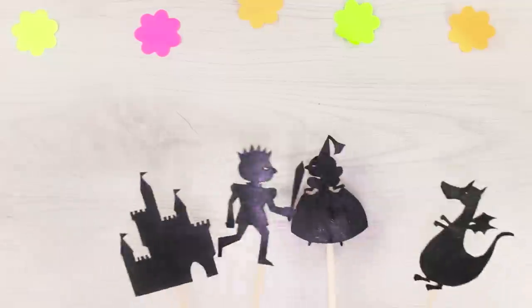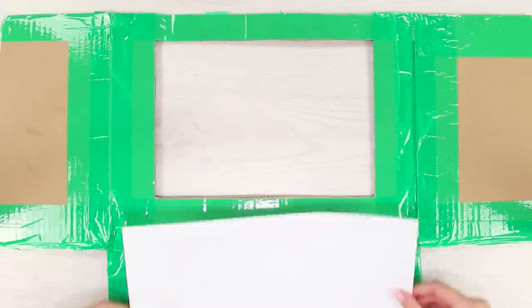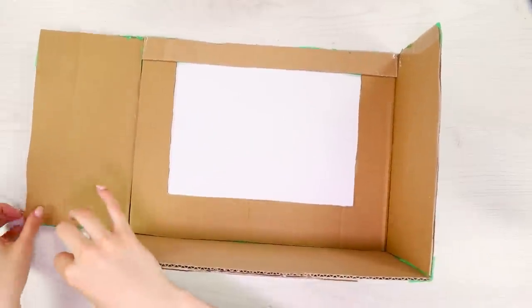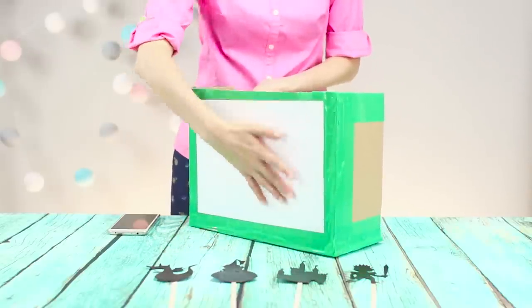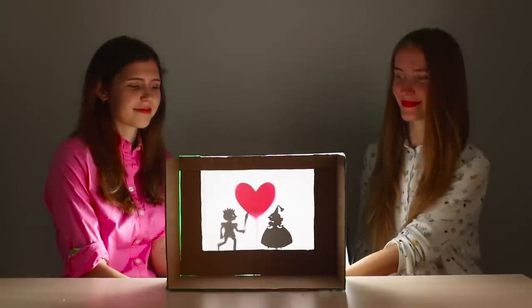Cut the figures out from cardboard and attach them to the sticks. Make a scene from the parts of the cardboard box. Attach a blank sheet of paper to the cardboard. Connect the sides of the box with scotch tape. Light up the phone on the back of the improvised theater. Call a friend for help and start a magical shady performance.